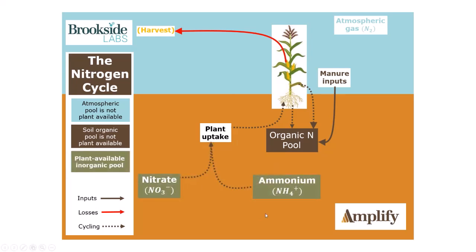So what forms is the corn plant — or any other plant — actually taking up? These two main forms are our plant-available inorganic forms: nitrate (NO3−), an anion that is negatively charged, and then the ammonium ion (NH4+), a cation that is positively charged. These two are what can go into the plant uptake pool and into the root system.